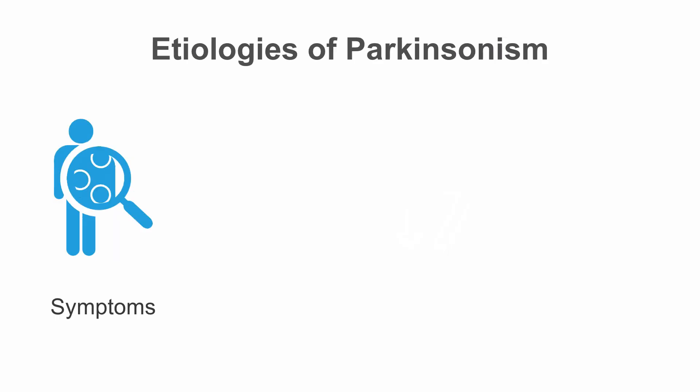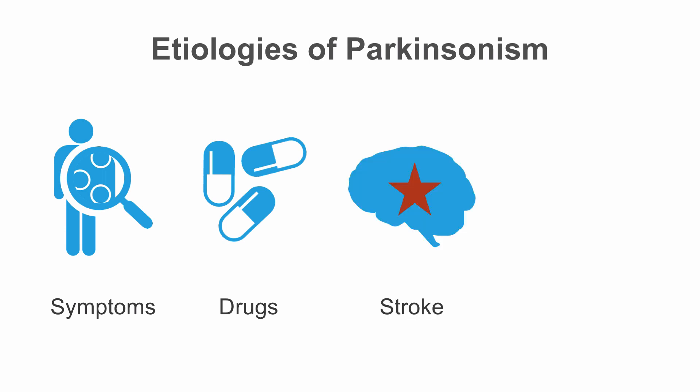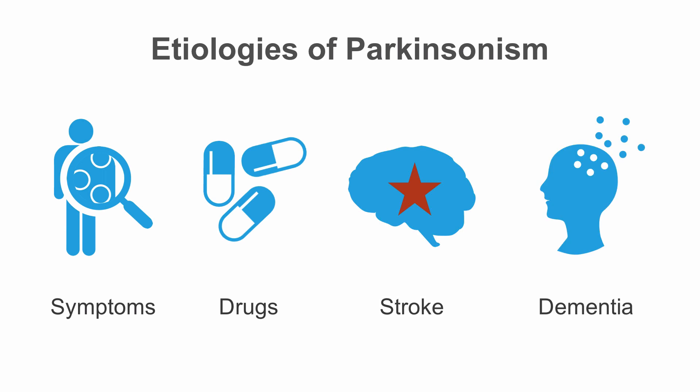Parkinsonism refers to the appearance of features of Parkinson's disease in a patient, which may be due to other pathology of the nervous system. Etiologies of Parkinsonism include Parkinsonian syndromes such as multiple system atrophy, drug-induced or iatrogenic causes like exposure to Reglan or antipsychotics, strokes in the striatal nigral tracts or the substantia nigra, or other conditions like normal pressure hydrocephalus.